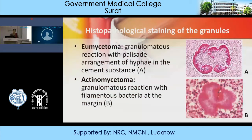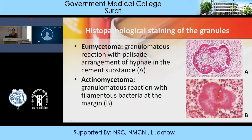In histopathological staining of granules, a cement-like substance is seen with palisade arrangement of hyphae in the cementic substance for Eumycetoma. In Actinomycetoma, a granulomatous reaction with filamentous bacteria at the margin is observed. These are the filamentous bacteria seen in histopathological sections.